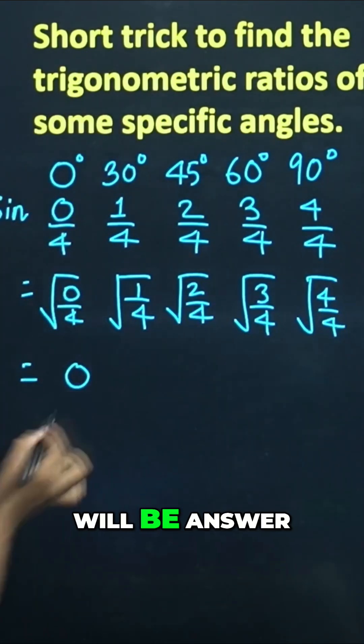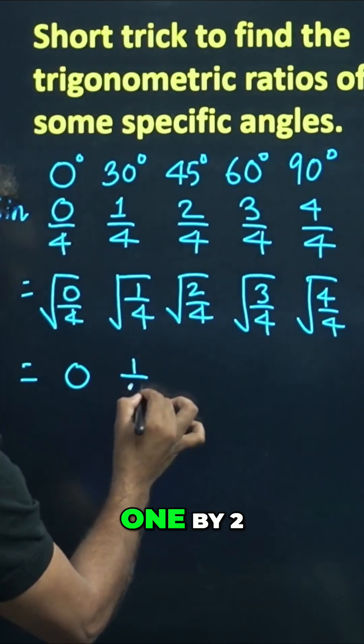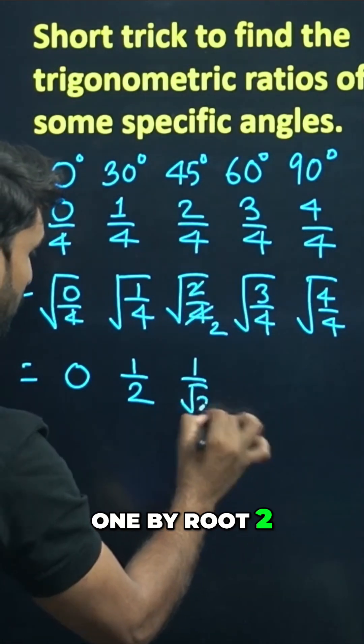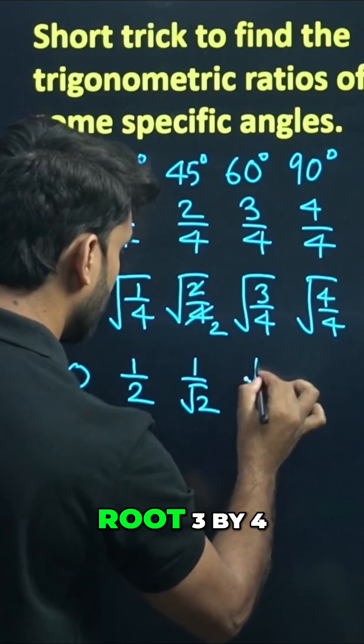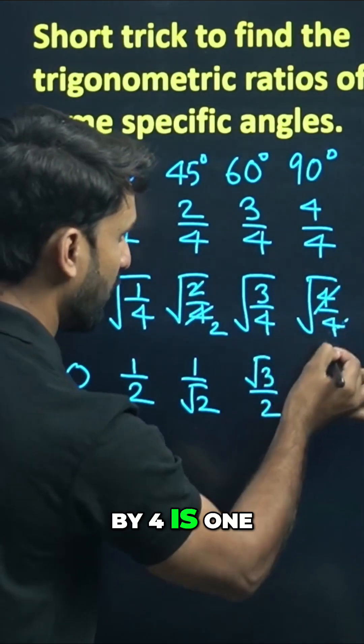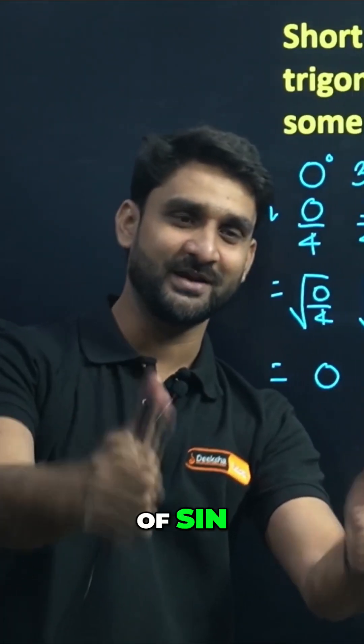You are getting 0 as the answer. Root 1 by 4 will be 1 by 2. Root 2 by 4, the 2s cancel, so we are getting 1 by root 2. Root 3 by 4 will be root 3 by 2. And root 4 by 4 is root 1, which is 1. These are the values of sine.